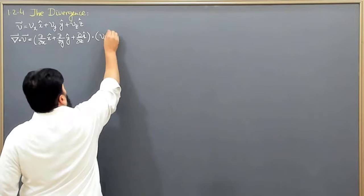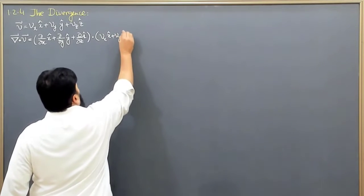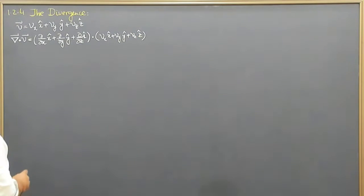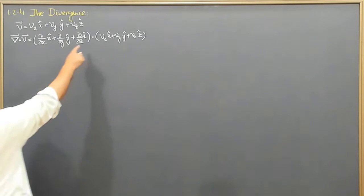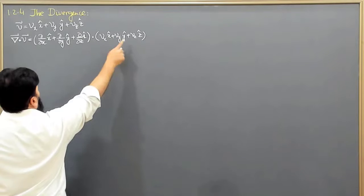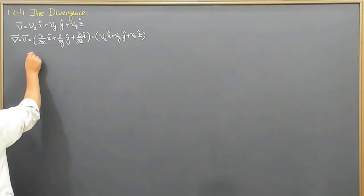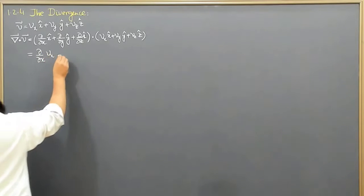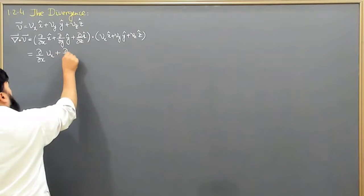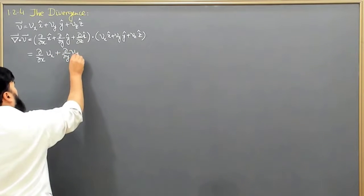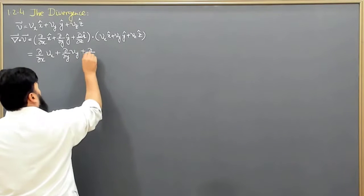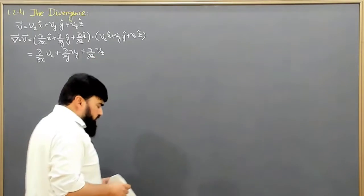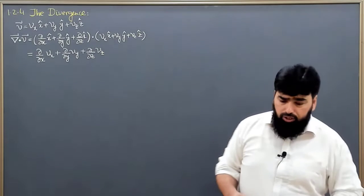So v is v_x x-hat plus v_y y-hat plus v_z z-hat. Since it is a dot product, only the matching components are multiplied. This gives us curly/curly-x of v_x, plus curly/curly-y of v_y, plus curly/curly-z of v_z. The divergence of a vector is just a number — it is a scalar quantity.